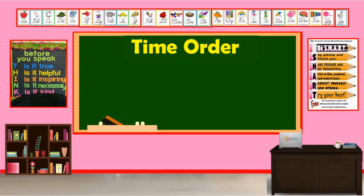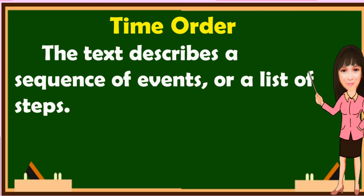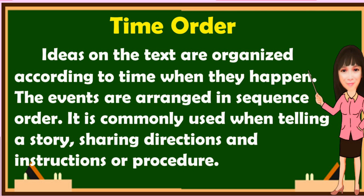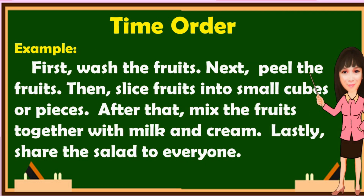And lastly, we have time order text. What is time order text type? The text describes a sequence of events or a list of steps. Ideas in the text are organized according to when they happen. The events are arranged in sequential order. It is commonly used when telling a story, sharing directions, instructions, or procedures. Here is an example: First, wash the fruits. Next, peel the fruits. Then, slice fruits into small cubes or pieces. After that, mix the fruits together with milk and cream. Lastly, share the salad to everyone. You can see the procedures about preparing a salad. This is time order.